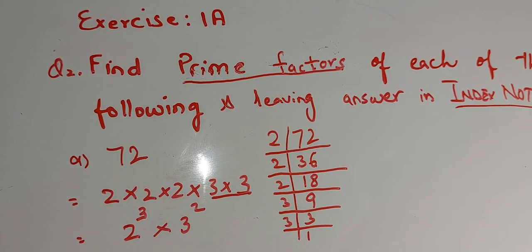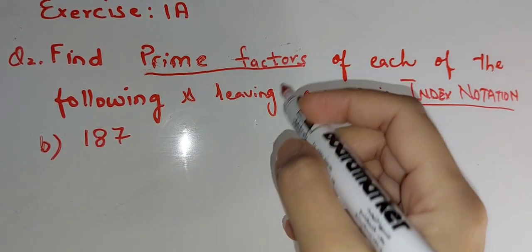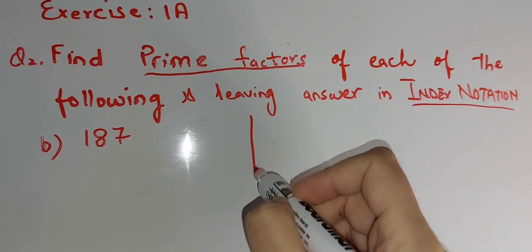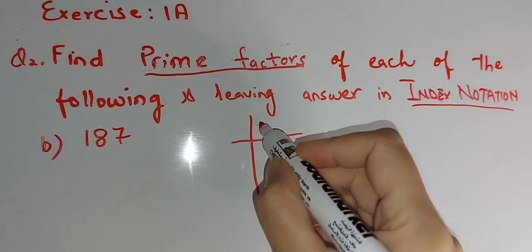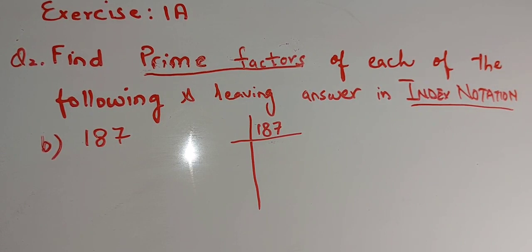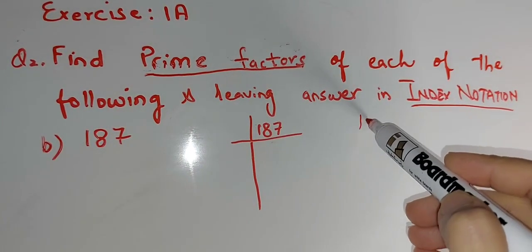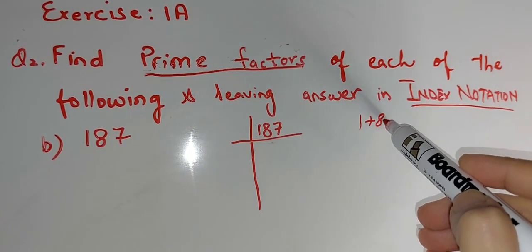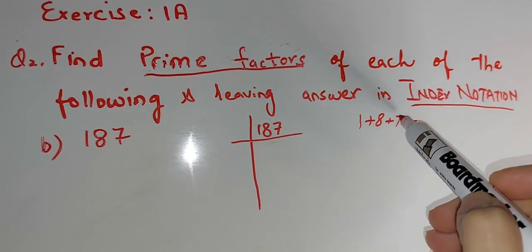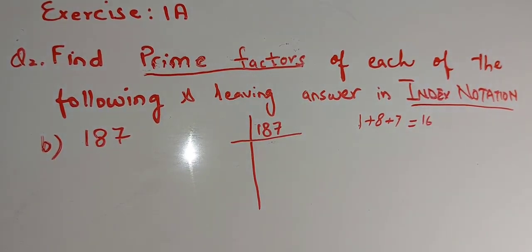Let's start part B. Part B is 187. We have to make the factors of 187. The number ends with 7, so it's not divisible by 2. We check if it is divisible by 3 by adding all digits: 1 plus 8 plus 7 equals 16. So it's not divisible by 3 either.